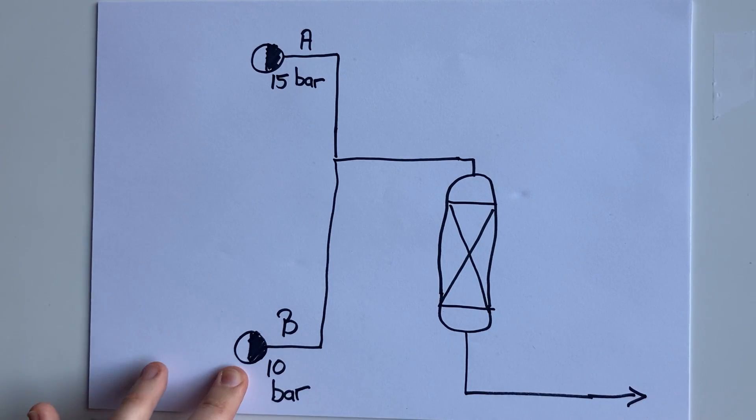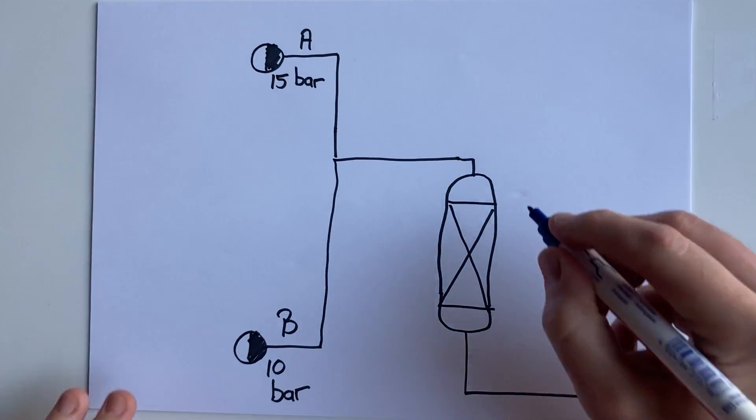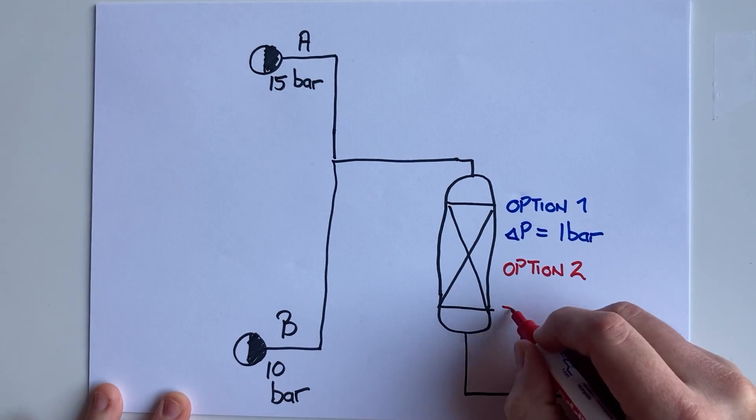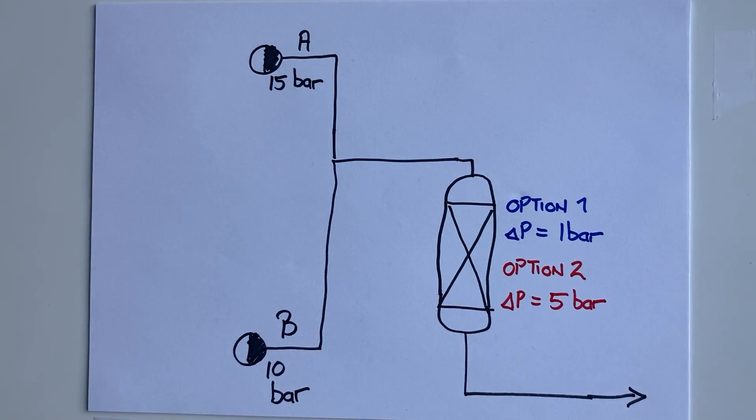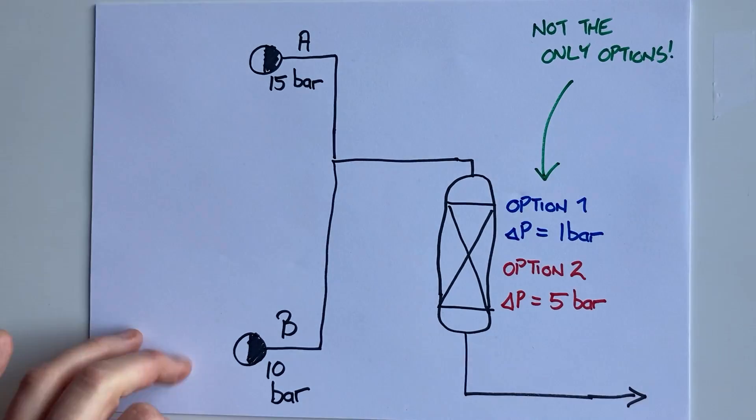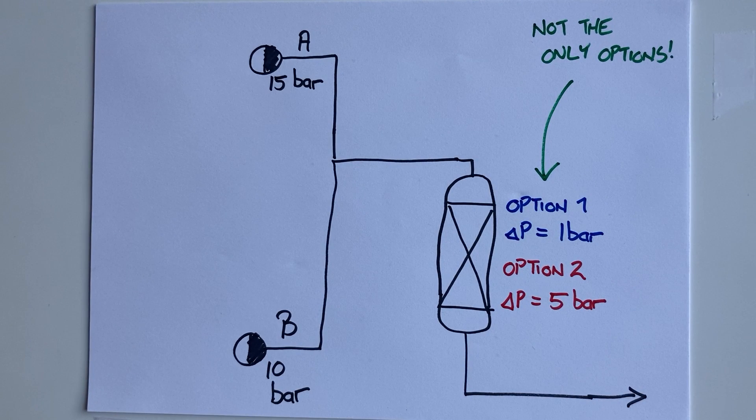My plant doesn't exist yet, so I could pick whether my reactor was going to have a pressure drop of 1 bar or 5 bar. There will be upsides and downsides for either choice. The answer is not fixed, and it is up to the person designing the system to choose a reasonable value. Your best bet is to use industry experience and reference text for recommended pressure drops that result in equipment sizes that are economically feasible.